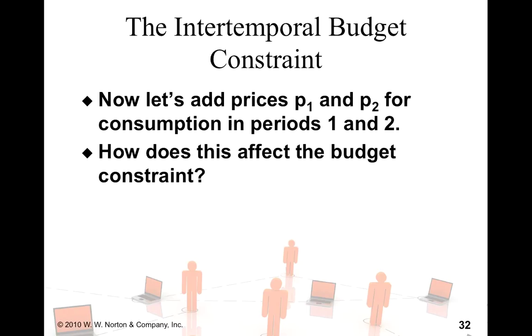Let's complicate things a little bit. Remember, we initially assumed that p1 and p2 were equal to 1, because we just wanted to deal with one complication at a time. In the previous slides, it was basically just the rate of interest. Now let's assume that p1 and p2 are not just 1, they are positive and greater than 1. So how does this affect the budget constraint?